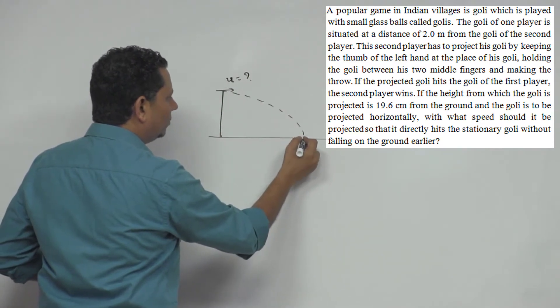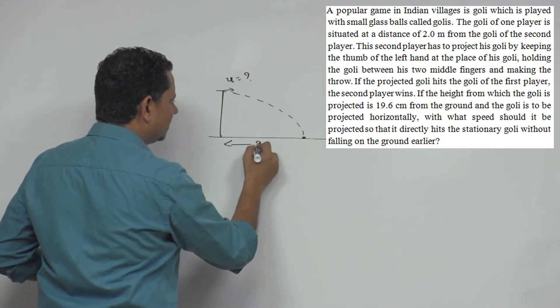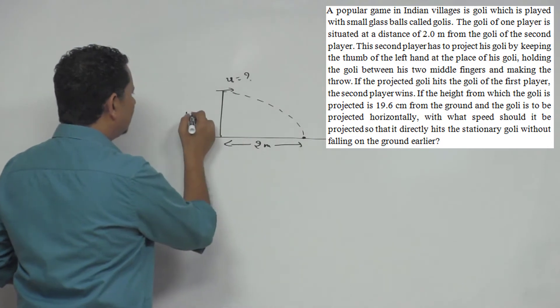So to hit the goalie which is at a distance of two meters and its height is 19.6 centimeters,